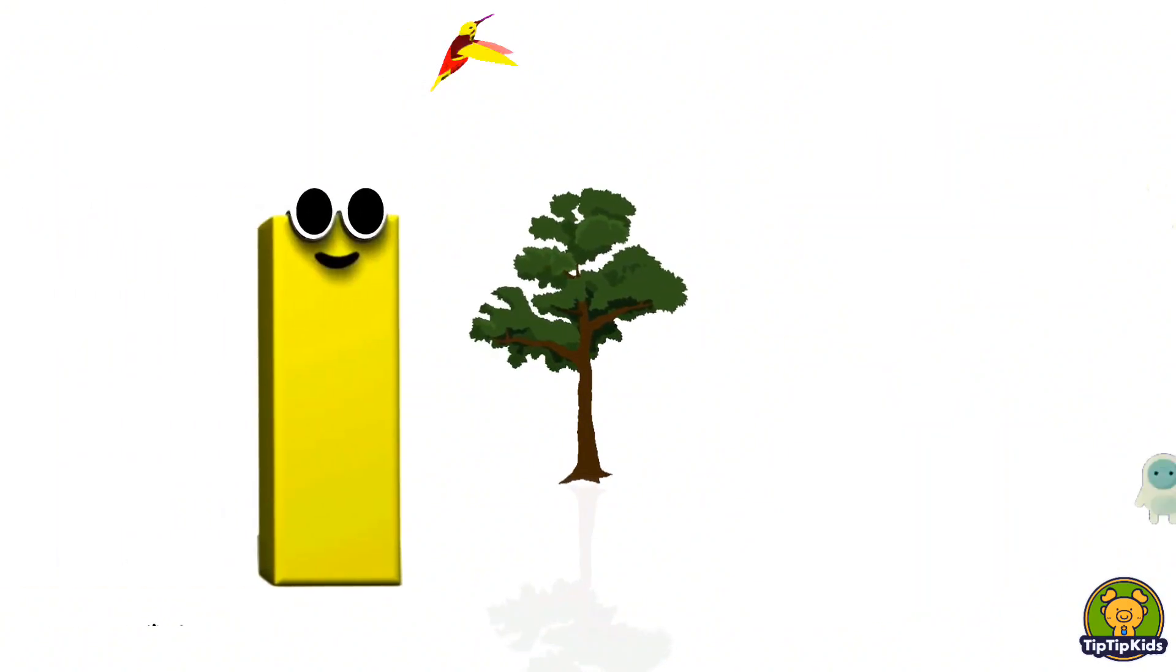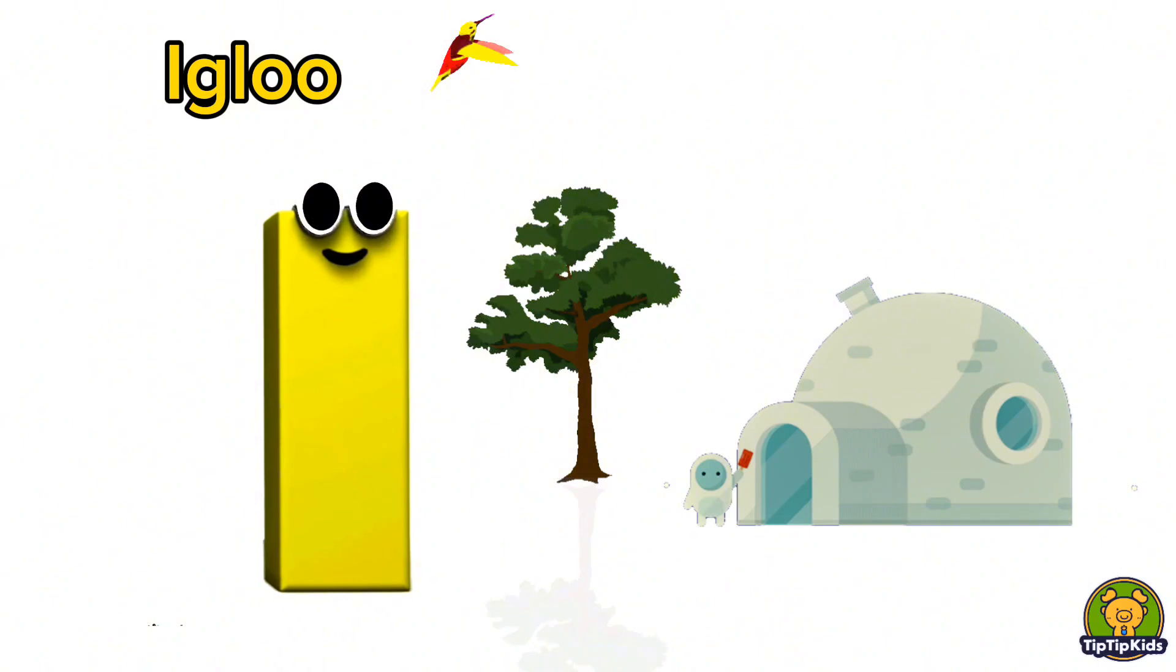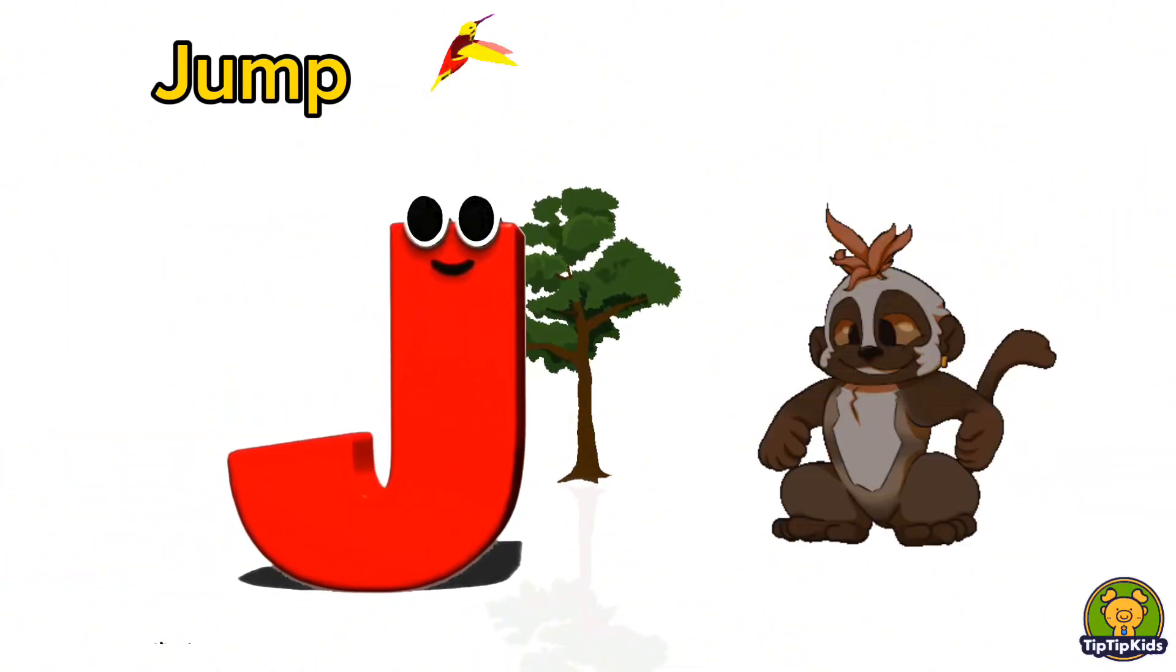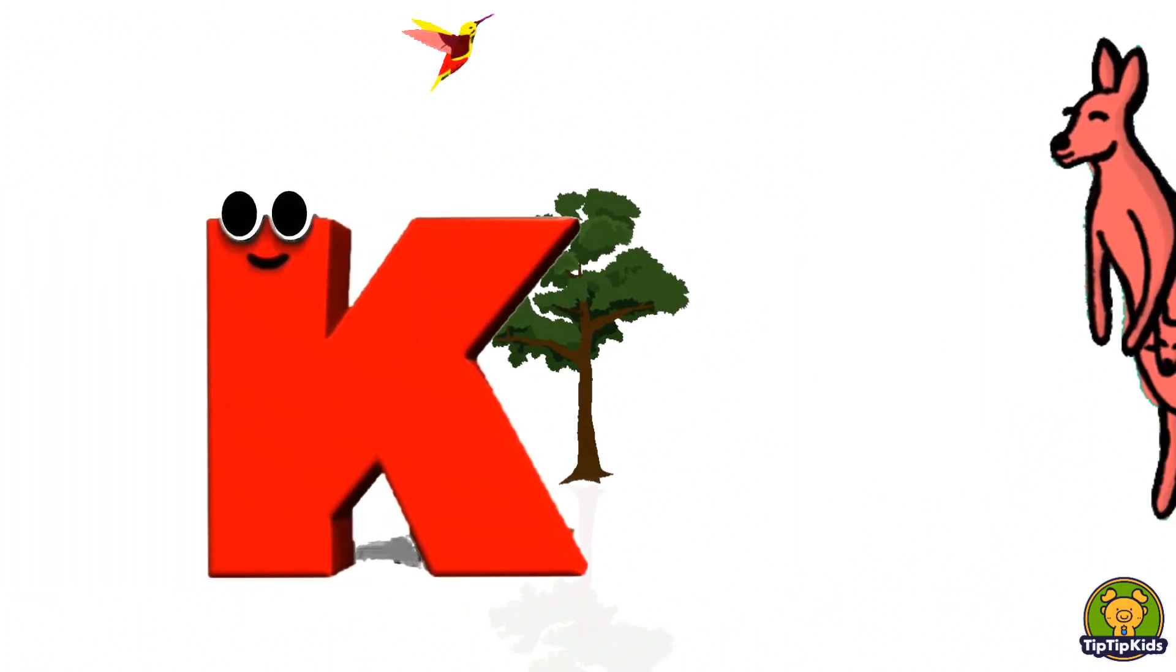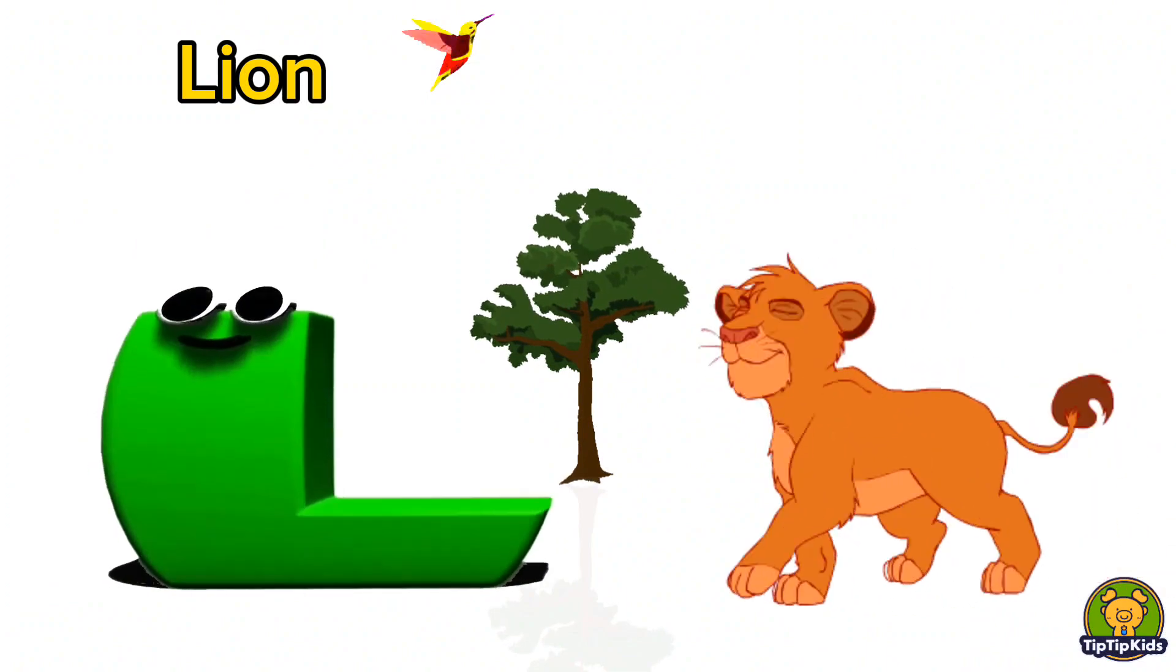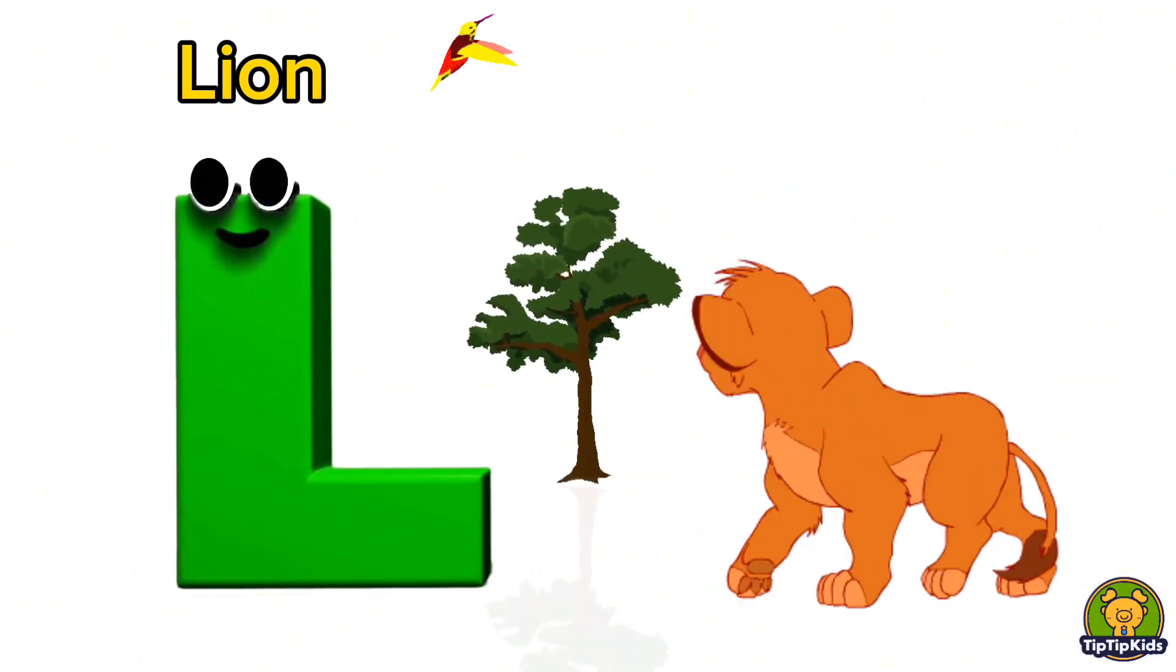I is for Igloo, I-I-Igloo. J is for Jump, J-J-Jump. K is for Kangaroo, K-K-Kangaroo. L is for Lion, L-L-Lion.